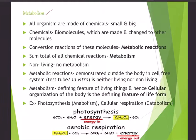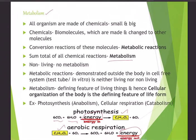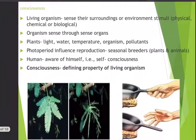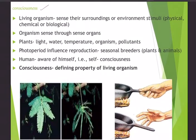Metabolism is the combination of anabolism and catabolism. Anabolism means joining together — for example, photosynthesis: 6CO₂ + H₂O gives rise to C₆H₁₂O₆ (glucose), with glucose monomers becoming polymers like starch. Catabolism is cellular respiration, where glucose is broken down to CO₂ and H₂O. In both anabolism and catabolism there is release of energy, which helps all living organisms maintain their life.